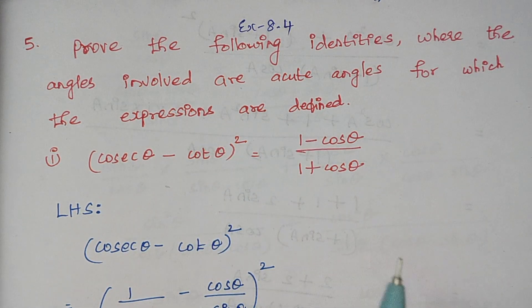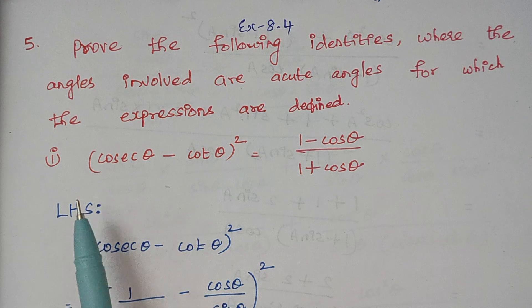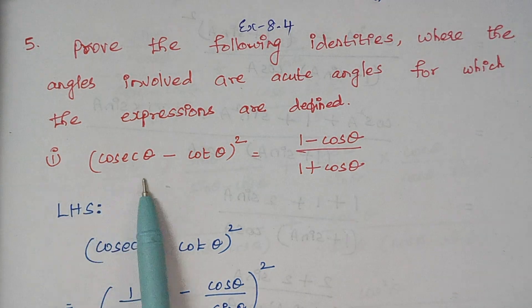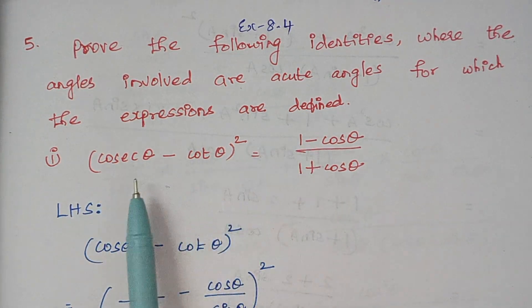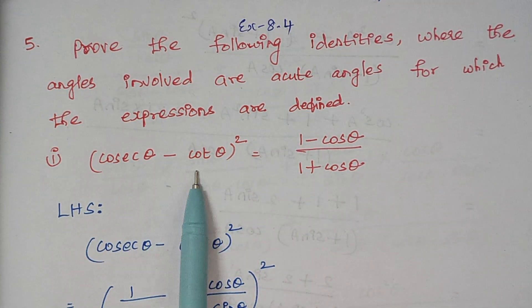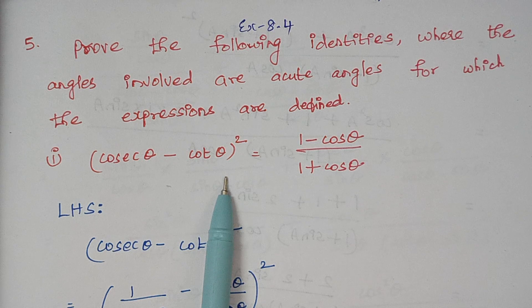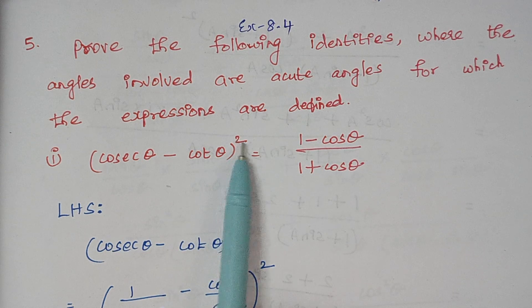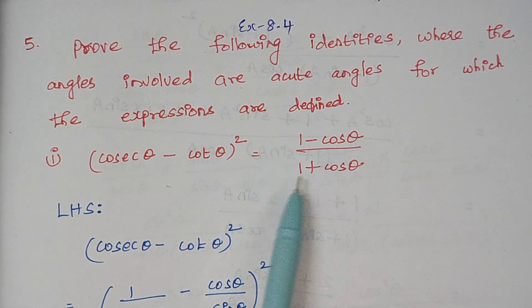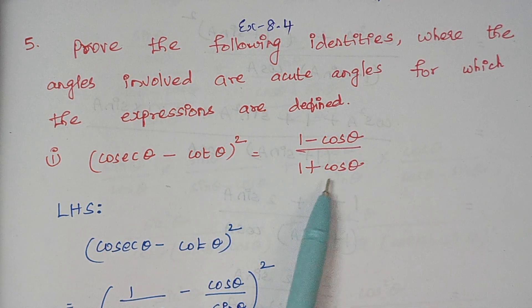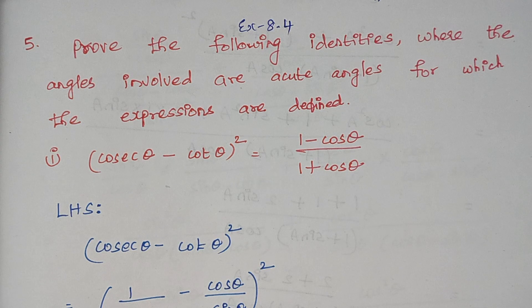So we have to prove the identities. The given expression is: cosecant theta minus cos theta, the whole square, is equal to 1 minus cos theta by 1 plus cos theta.